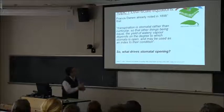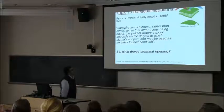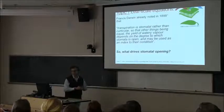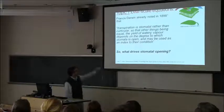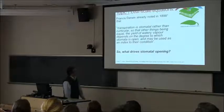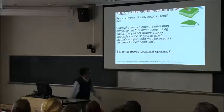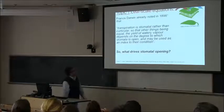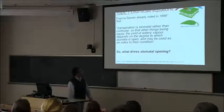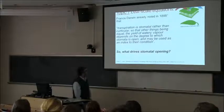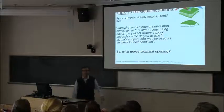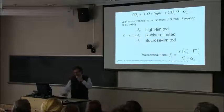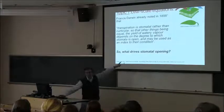So just a brief review of photosynthesis. This is just a quick survey. The leaf scale equations that we will be using—Francis Darwin, already in 1898, noted that transpiration is stomatal rather than cuticular. This is a quotation from the paper itself. So that other things being equal, the yield of watery vapor depends on the degree to which stomata is open and may be used as an index to their condition. So basically the question is, what drives the opening? By the way, you still find today with those conclusions.